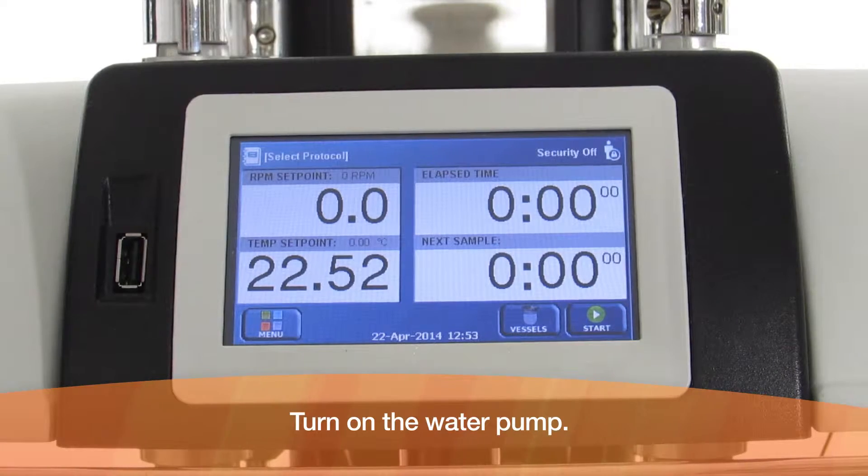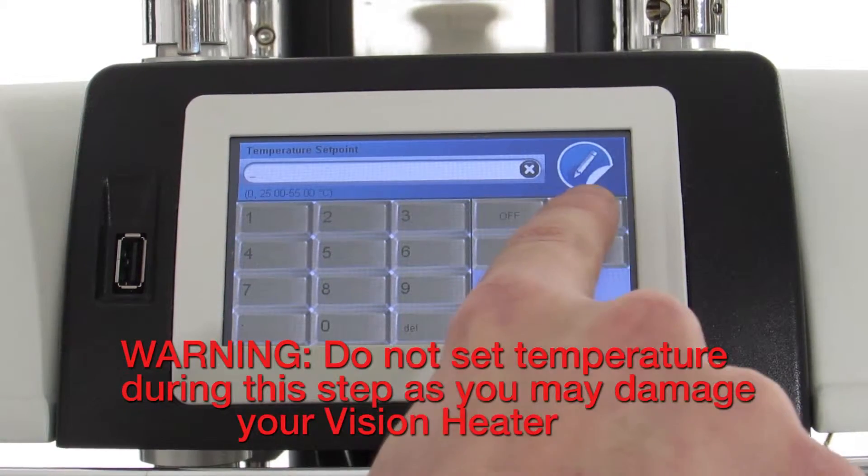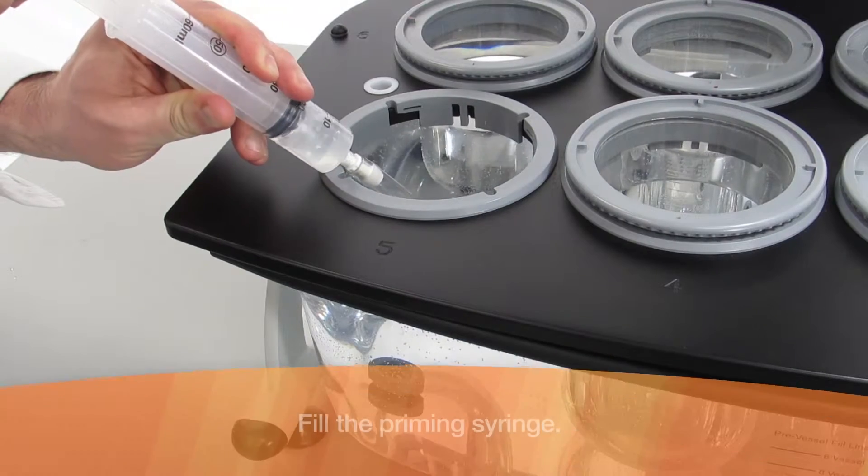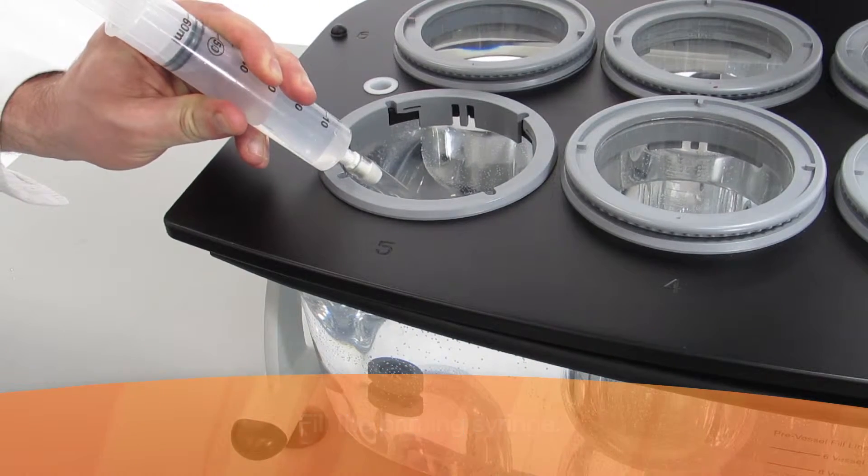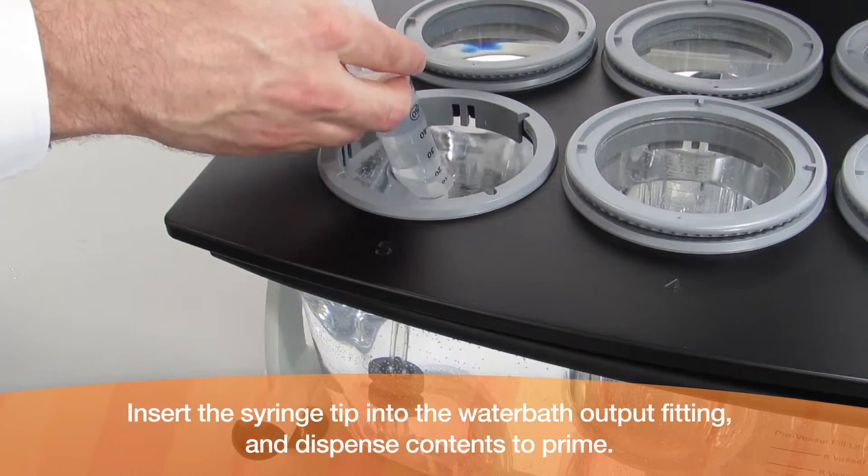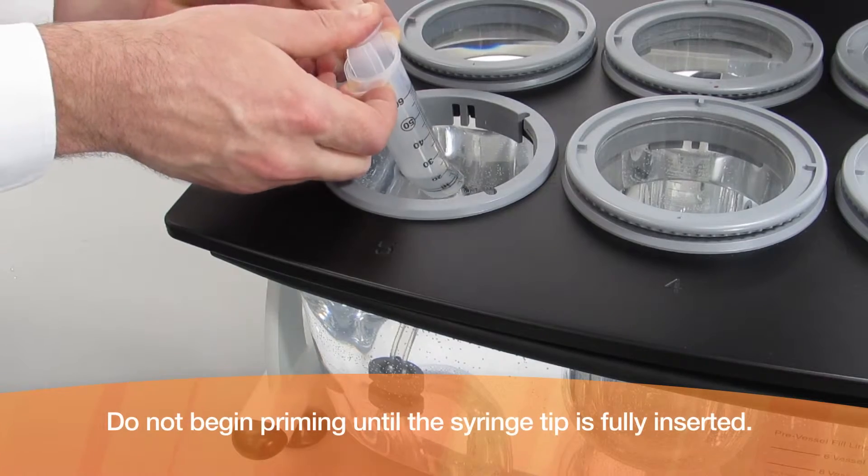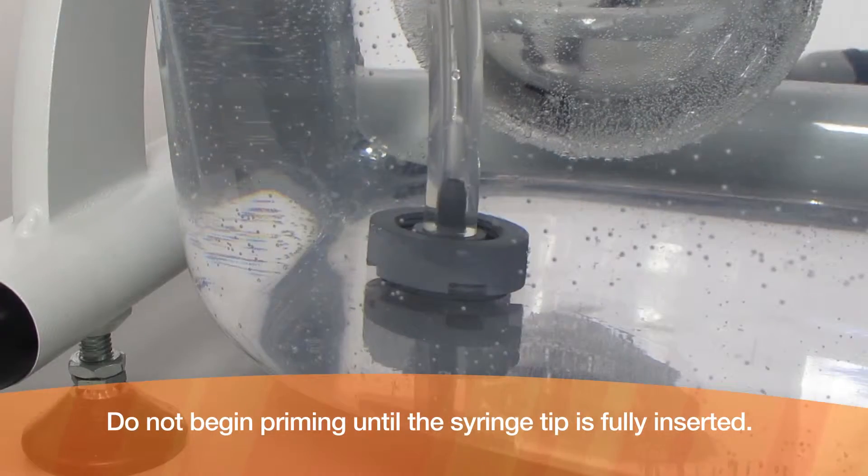Turn on the water pump. Fill the priming syringe. Insert the syringe tip into the water bath output fitting and dispense contents to prime. Do not begin priming until the syringe tip is fully inserted.